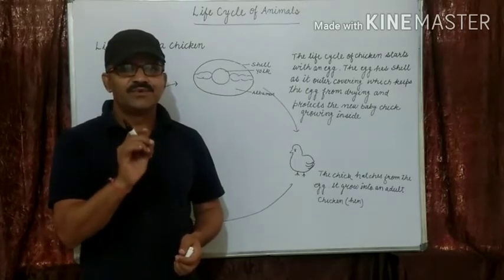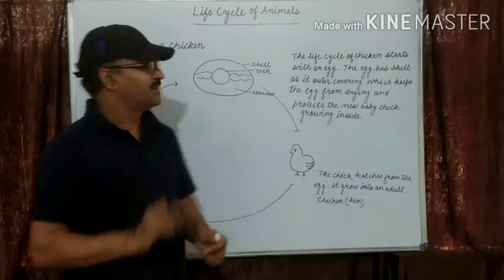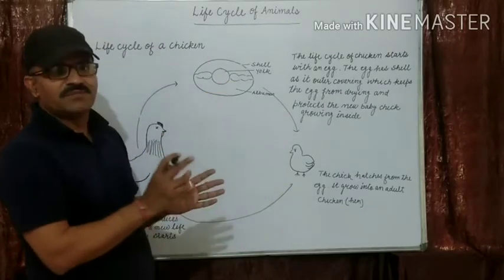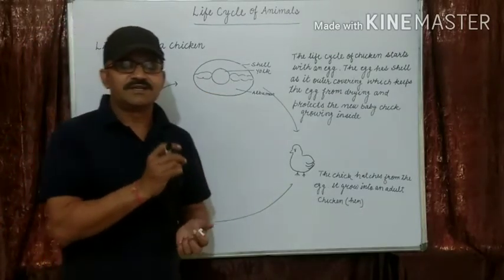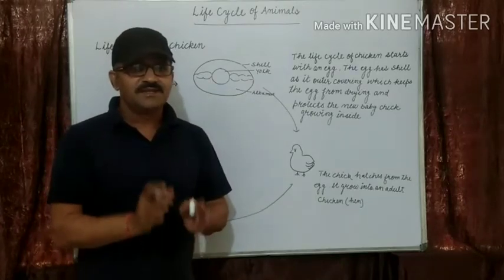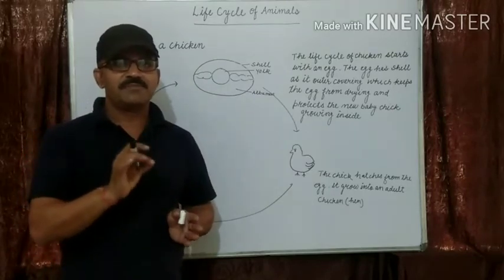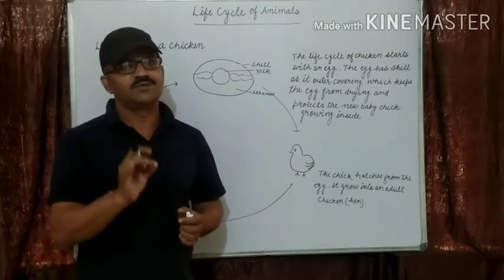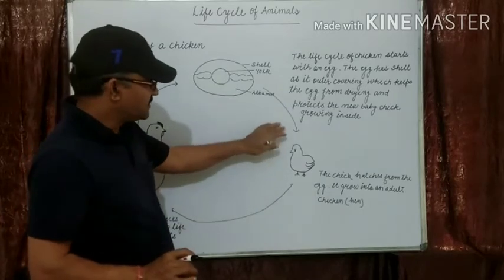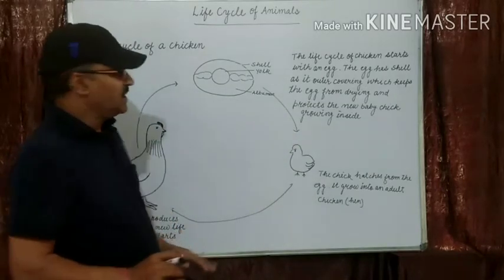The yolk contains food for the growing baby, called the embryo. It collects and stores food for the embryo inside the egg. The embryo undergoes various developmental changes and grows into a chick.